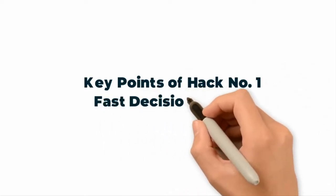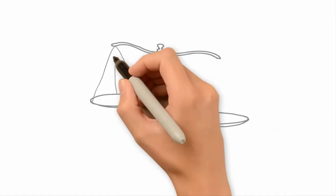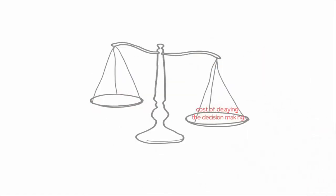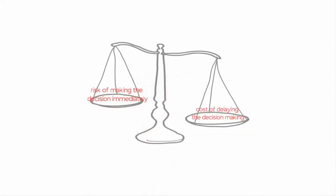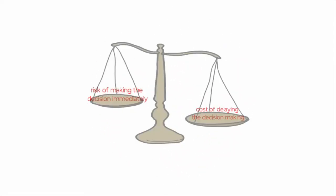So what are the key points of the hack of fast decision making? Firstly, take into account the cost of delaying the decision making, which often causes disengagement of employees versus the risk of making the decision immediately. You may find that in most cases, the cost of delay far outweighs the risk of making a fast decision.